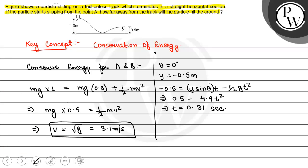We need to find the horizontal distance. How far away from the track will the particle hit the ground? X will be equal to V times T, that is 3.1 times 0.31, which will be equal to approximately 1 meter.